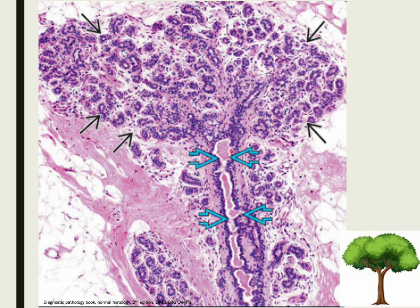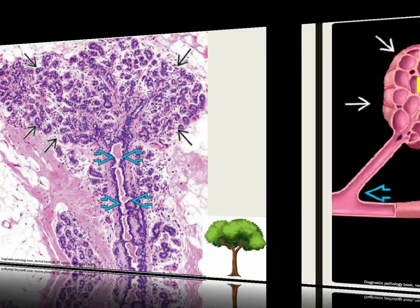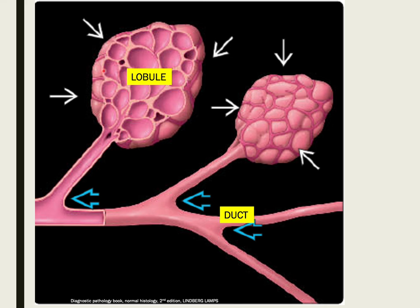This figure shows the histology of the terminal duct lobular unit. It has an architectural organization that looks like a tree, where the terminal duct forms the trunk and opens into smaller acini that form the branches, representing the lobules. The white arrows point to the terminal duct lobular unit — the functional unit where milk is produced by the luminal cells — and the blue arrows point to the branching ducts connected to the terminal duct lobular unit.